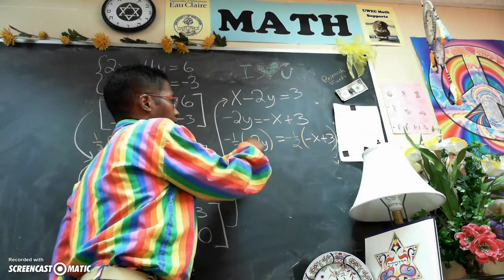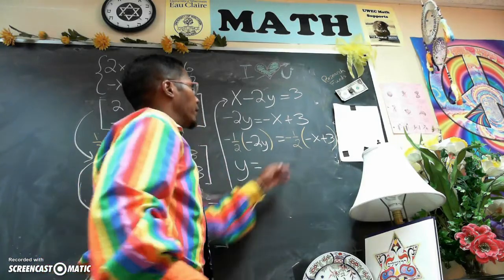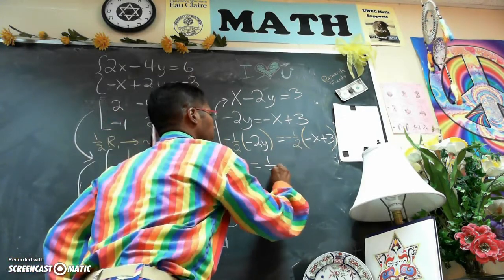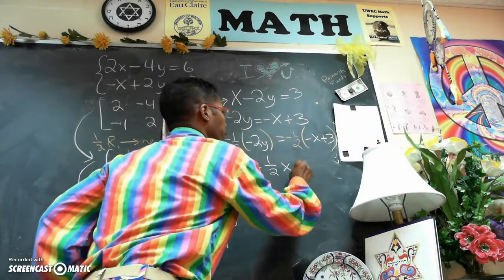So negative half times negative 2 is plus positive 1. So we have a y here. Negative 1 half times negative x is 1 half x. Negative 1 half times 3 is negative 3 halves.